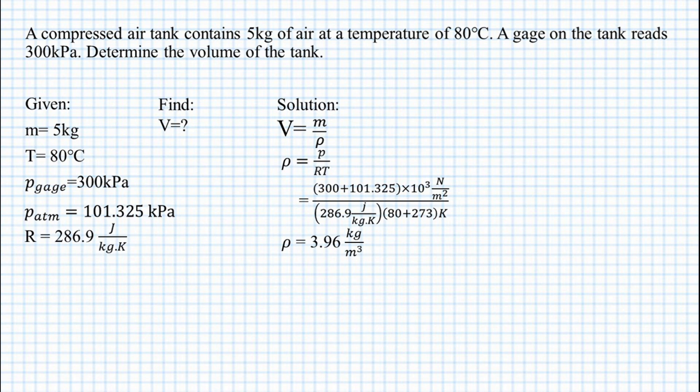Since we already have the value of density, then we solve for the volume. Volume equals mass over density, and the mass we have is 5 kilograms over the density of 3.96 kilogram per meter cubed. We cancel out the same units so the meter cubed will remain.